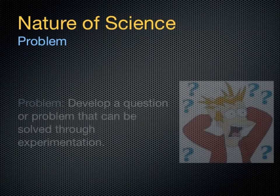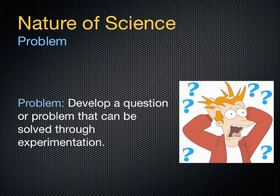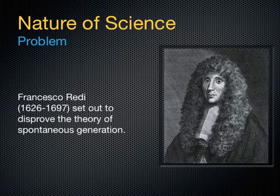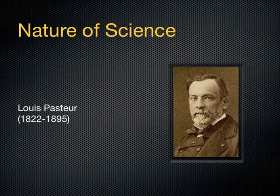The first thing that's going to happen is you're going to encounter a question or a problem that you need to solve using experimentation. There is always going to be a problem you encounter first. For example, one from the past involved maggots forming on meat — a hypothesis called spontaneous generation. This was explored by a scientist named Francisco Redi, who set out to disprove it in the 1600s.